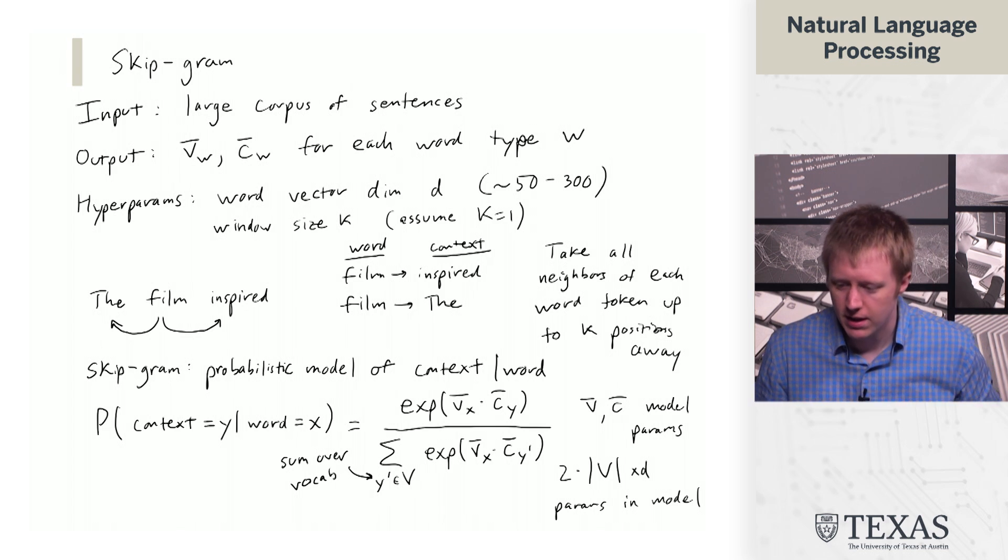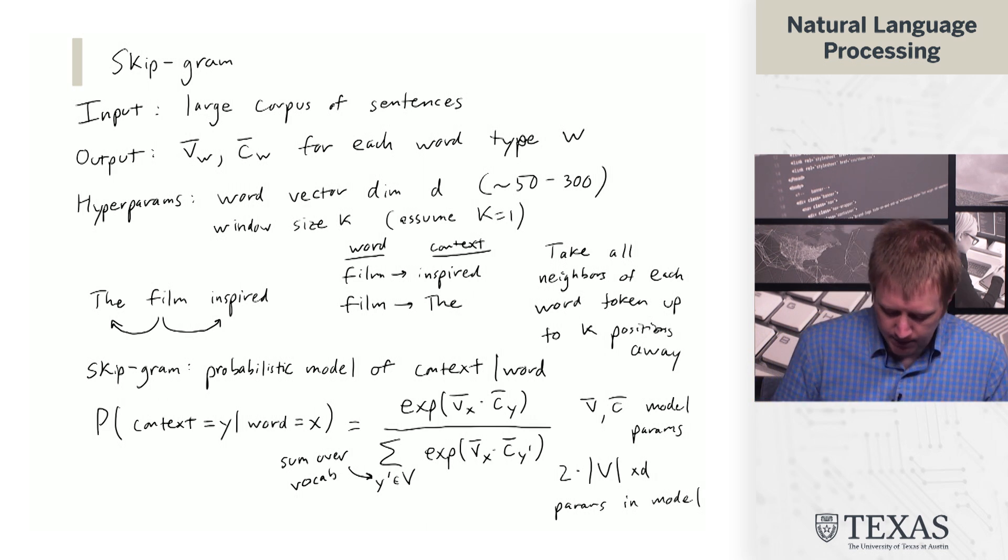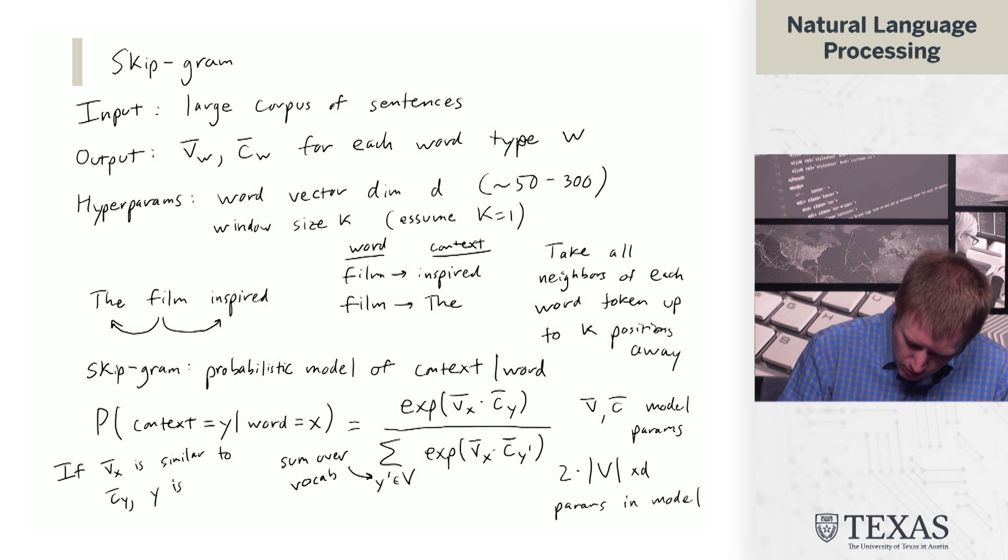And each of these is going to be V by D. And the way to think about this is just that, basically think about stacking up the vectors for these words into one big matrix. And so you're going to have V rows and each of those is a D dimensional word embedding.